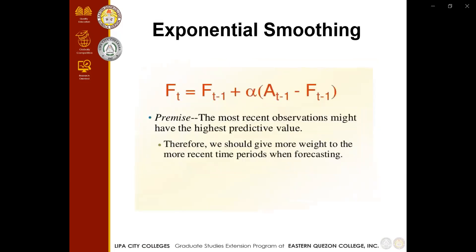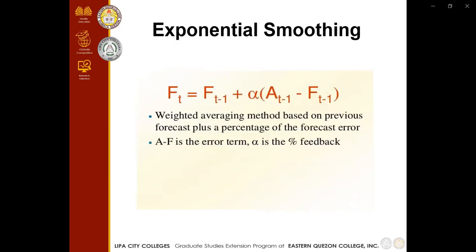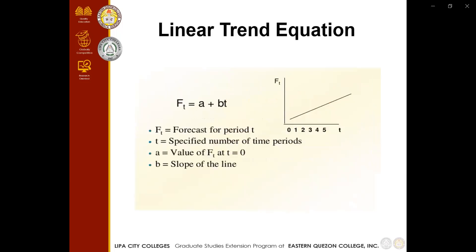For exponential smoothing, its premise is that the most recent observation might have the highest predictive value. Therefore, we should give more weight to the more recent time periods when forecasting. It is a weighted averaging method based on the previous forecast plus a percentage of the forecast error. The actual minus the forecast is the error term, and alpha (a) is the percentage feedback. We also have the linear trend equation, where Ft stands for the forecast for a given time period, a equals the value of the forecast at time zero, and b equals the slope of the line.